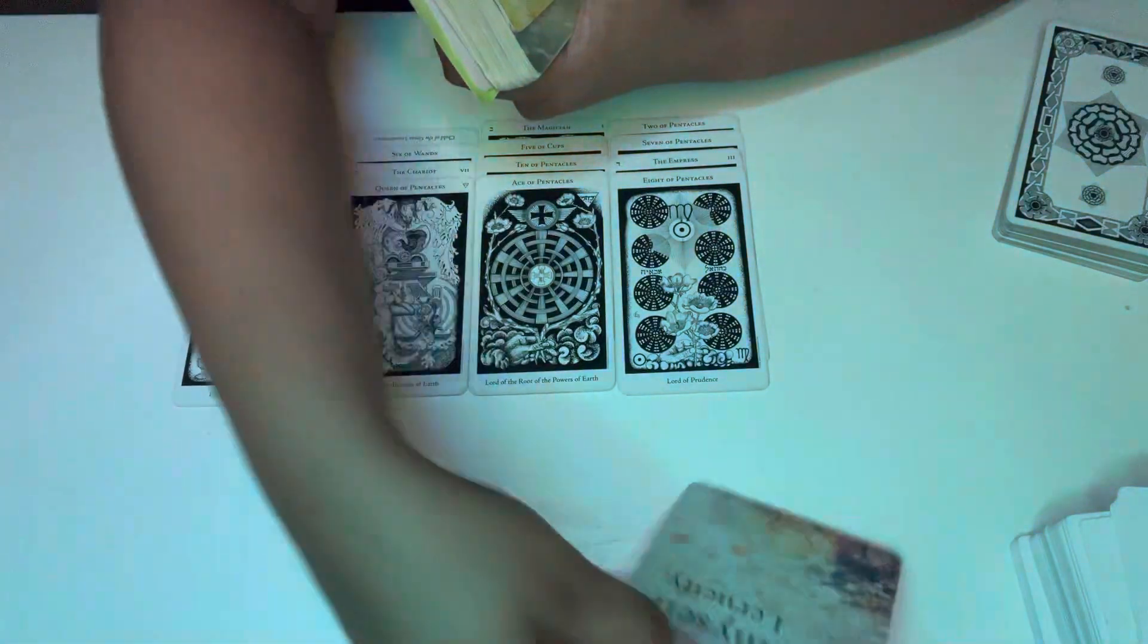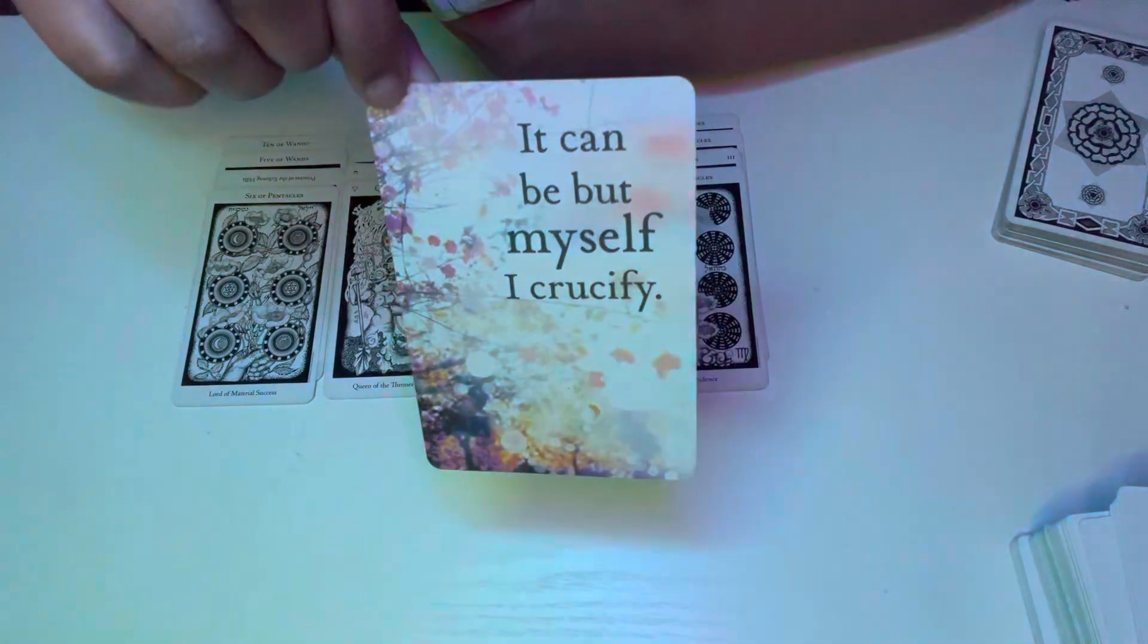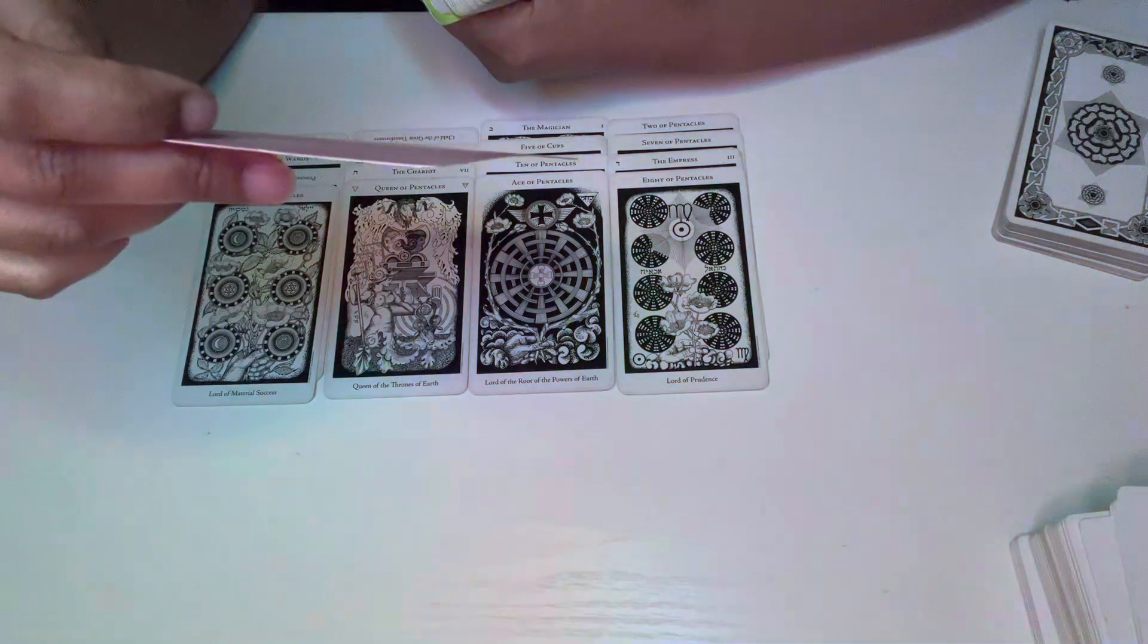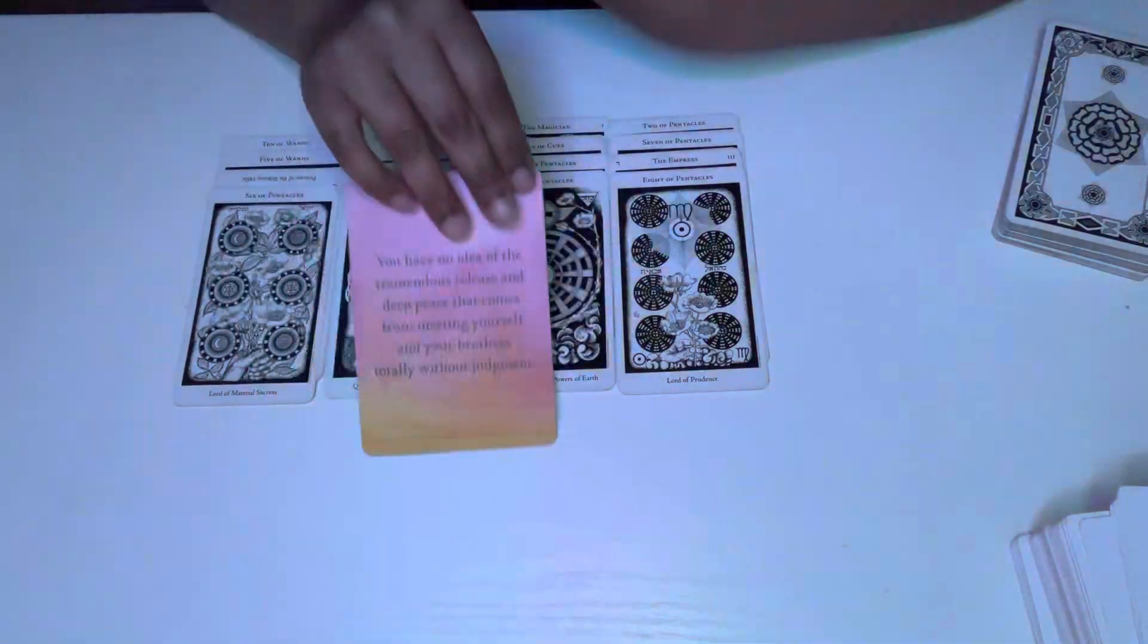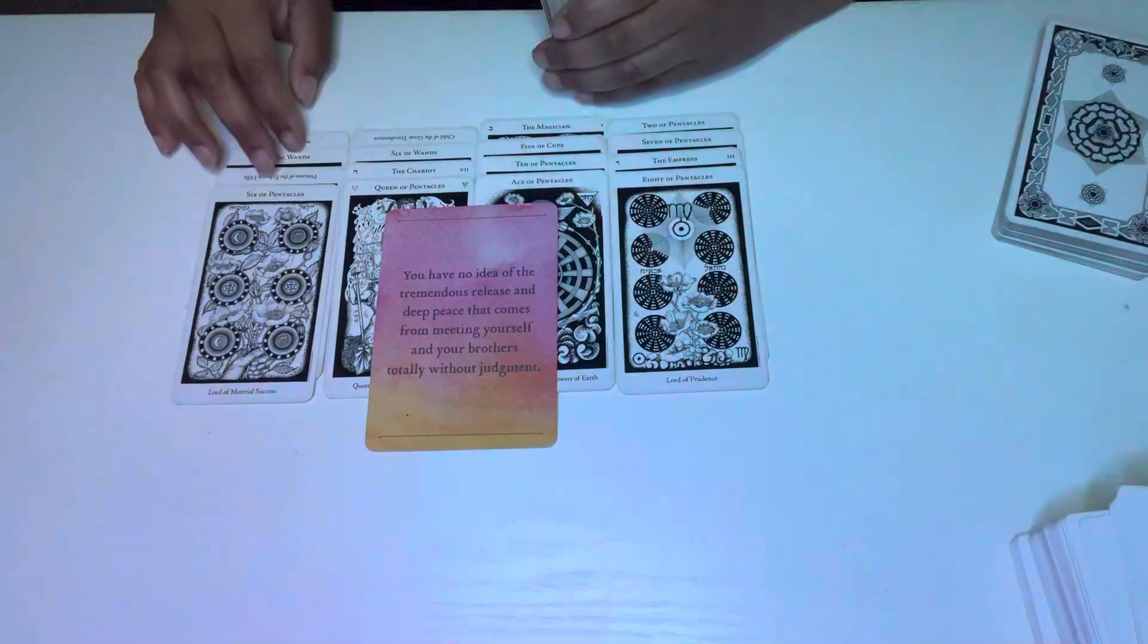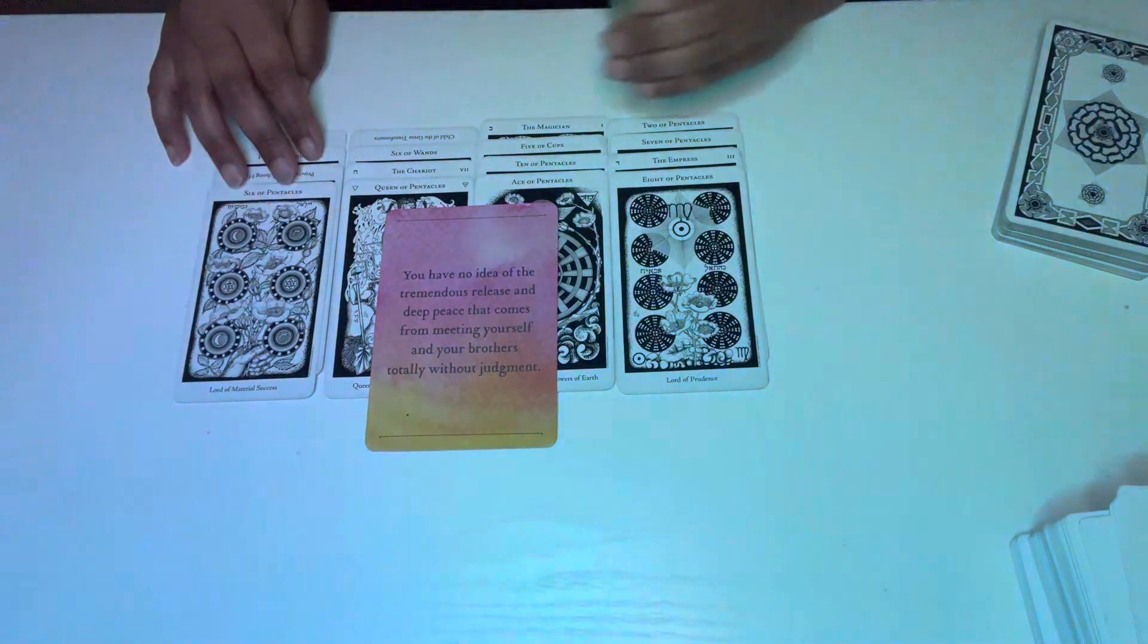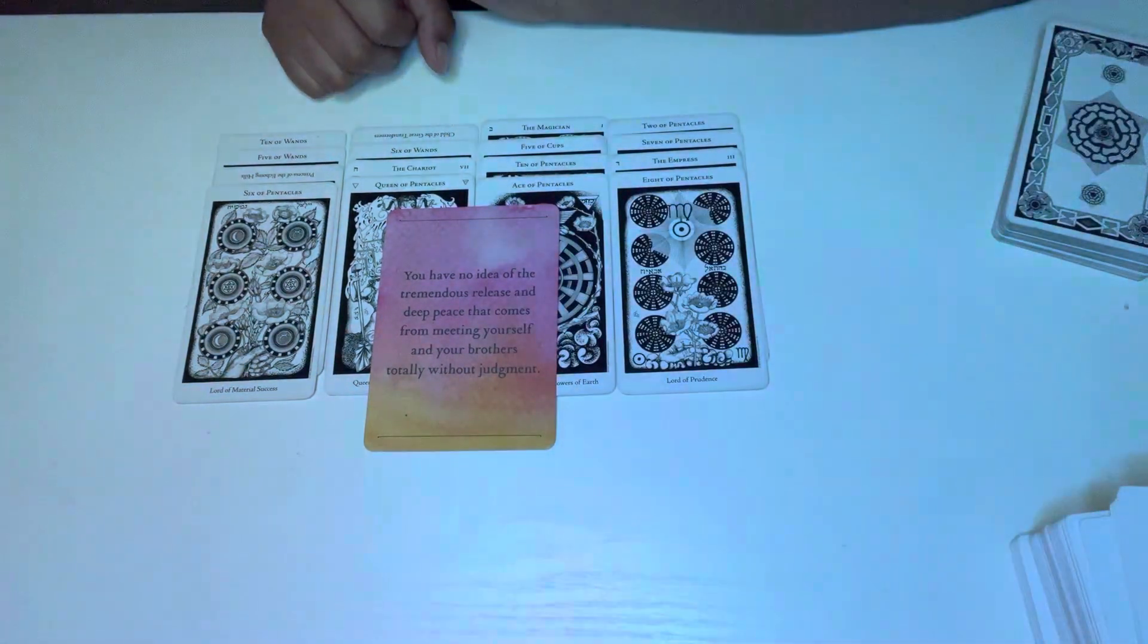Holy spirit what is the overall message and advice for my Aquarius. It can be but myself I crucified. Somebody else got the same card. It says you have no idea of the tremendous release and deep peace that comes from meeting yourself and your brothers totally without judgment. Somebody is just not on your level. I want to say Libra. You could have Libra placements in your chart. You could be dealing with a Libra. I'm not really picking up on air energy in this reading but they did get the same card. That's what I have for you Aquarius and until next time bye.